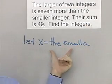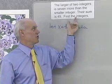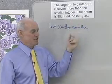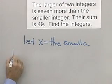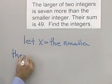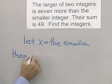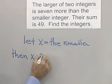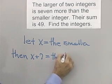So if I write, let's let x equal the smaller integer, then I'm going to write the larger integer in terms of x. Let's see what that looks like. I'll say then x plus 7 equals the larger integer.